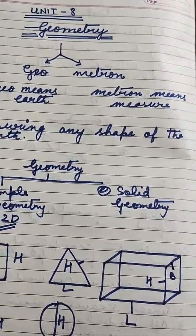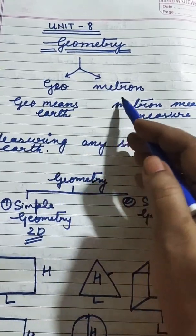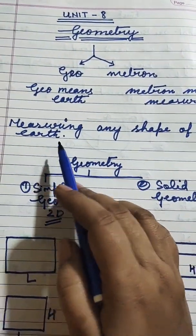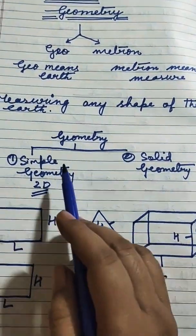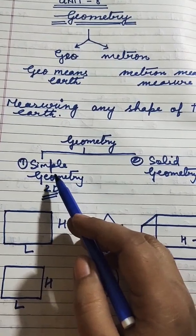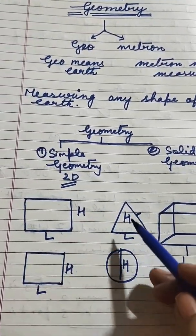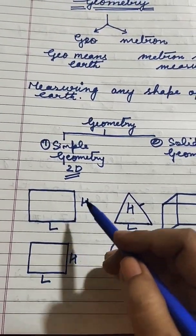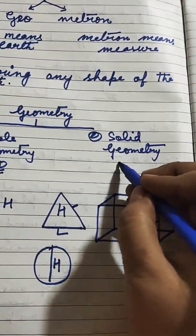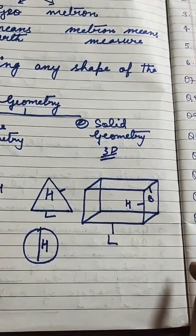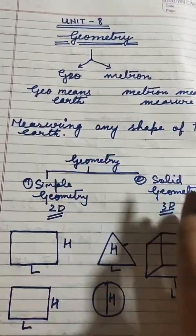I think sab ko samaj me a gaya hoga. Geometry kia hai? Geometry two Greek words se meil kar bana hai. First is Geo — Geo means Earth. Second is Metron — Metron means measure. Means hum earth me kisi bhi shape ko jab napenge to wou Geometry hooga. Geometry ko hum ne kitne parts me divide kiya hai? Two parts me. Number one hai hamara simple geometry and number two hai hamara solid geometry. Simple geometry me plain figures aate hai, two D shapes aate hai — jis mei keval length aur height hooti hai. Solid geometry me 3D shapes aate hai, jis mei length, height and breadth — 3 dimensions hooti hai.